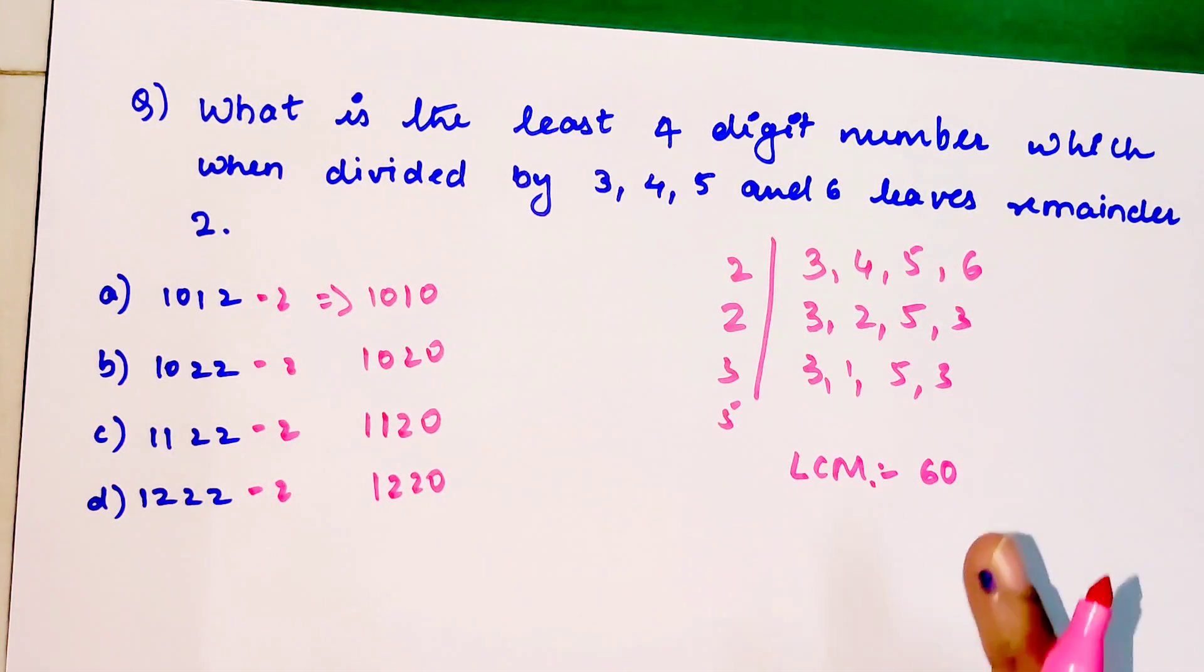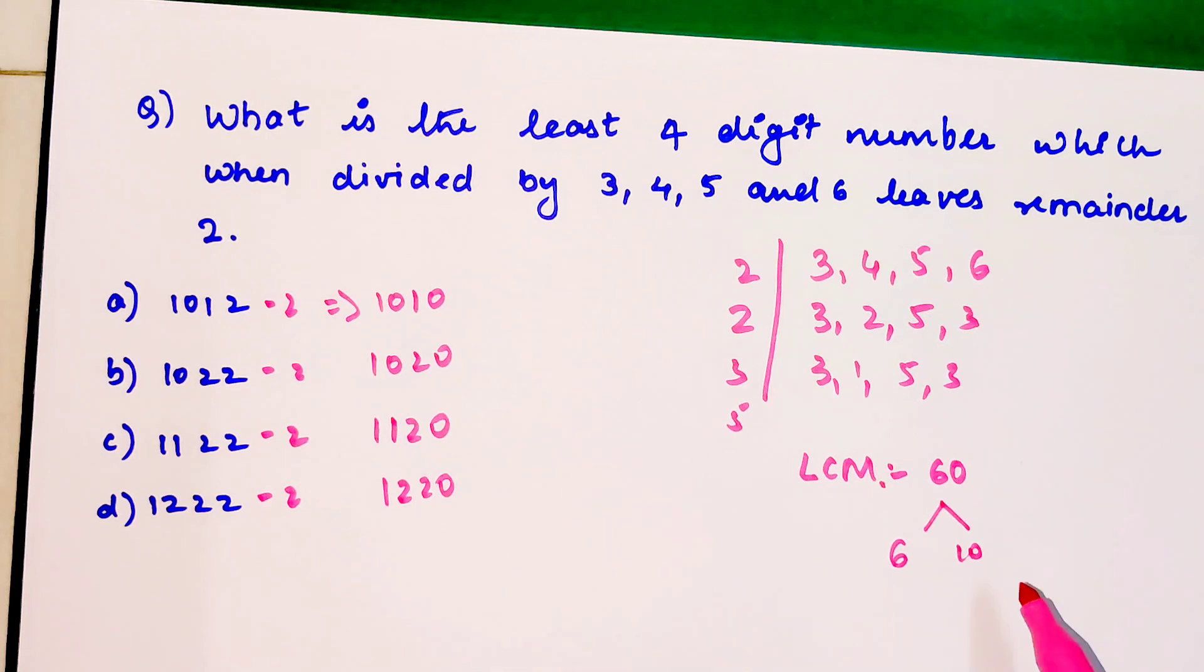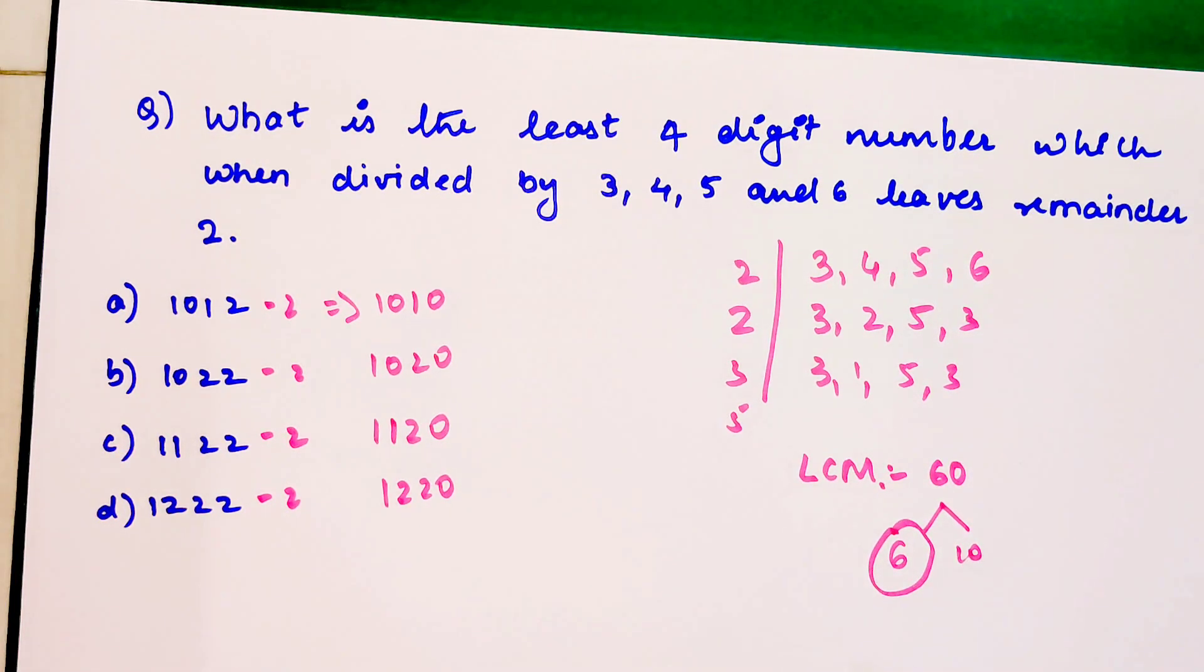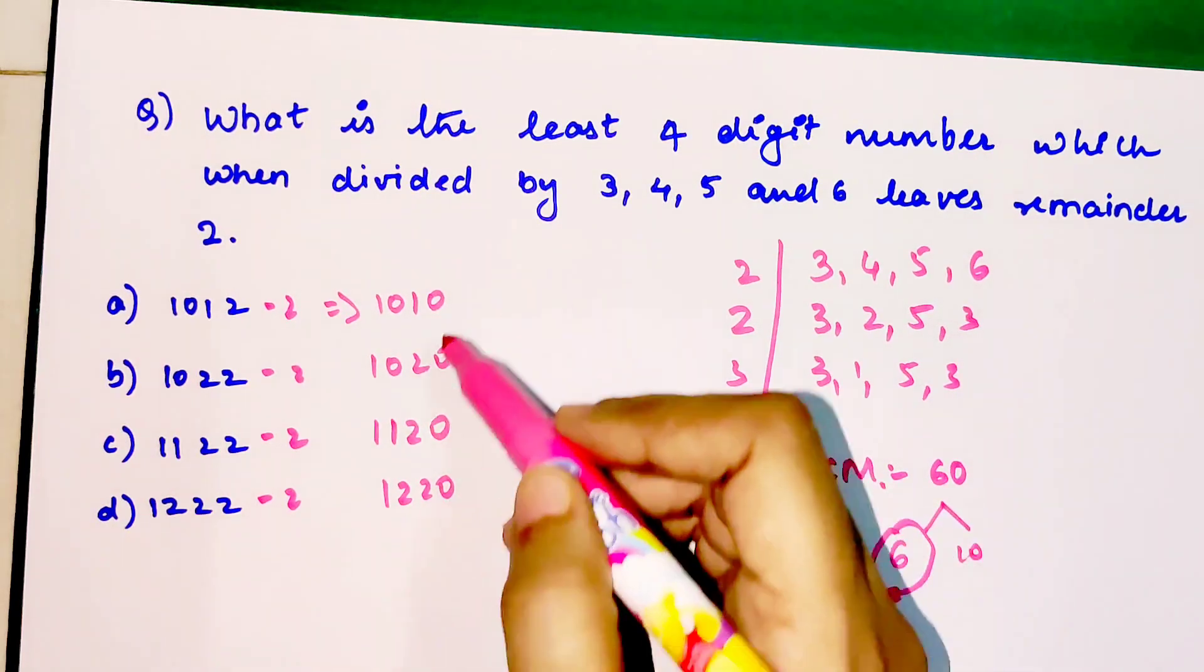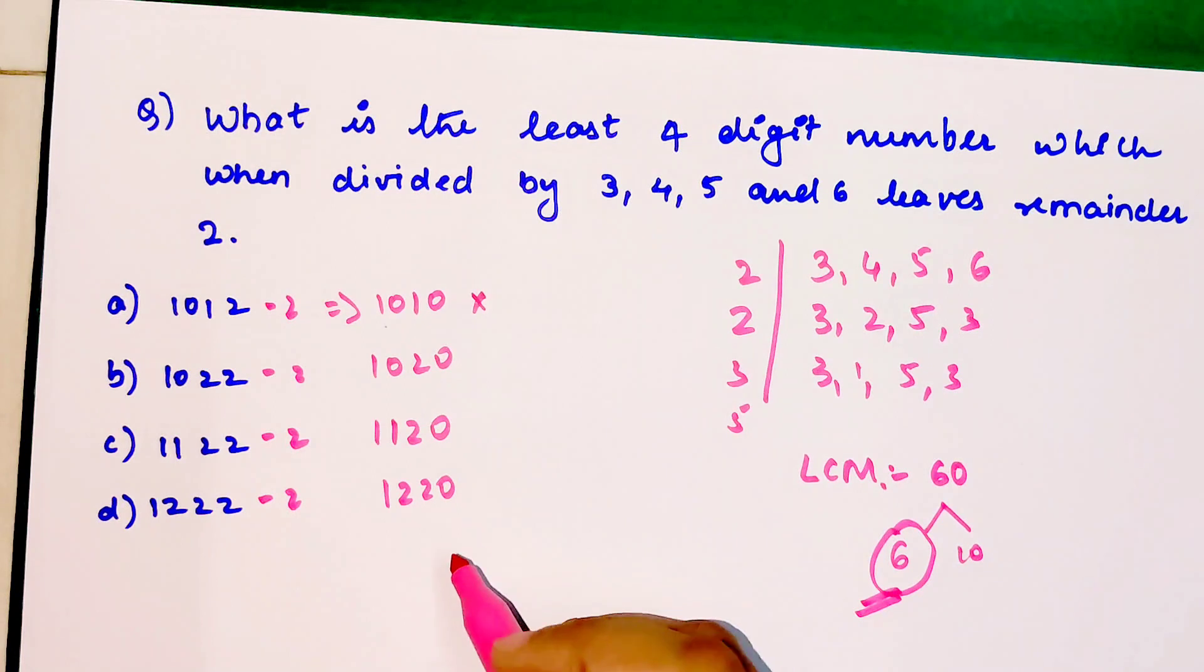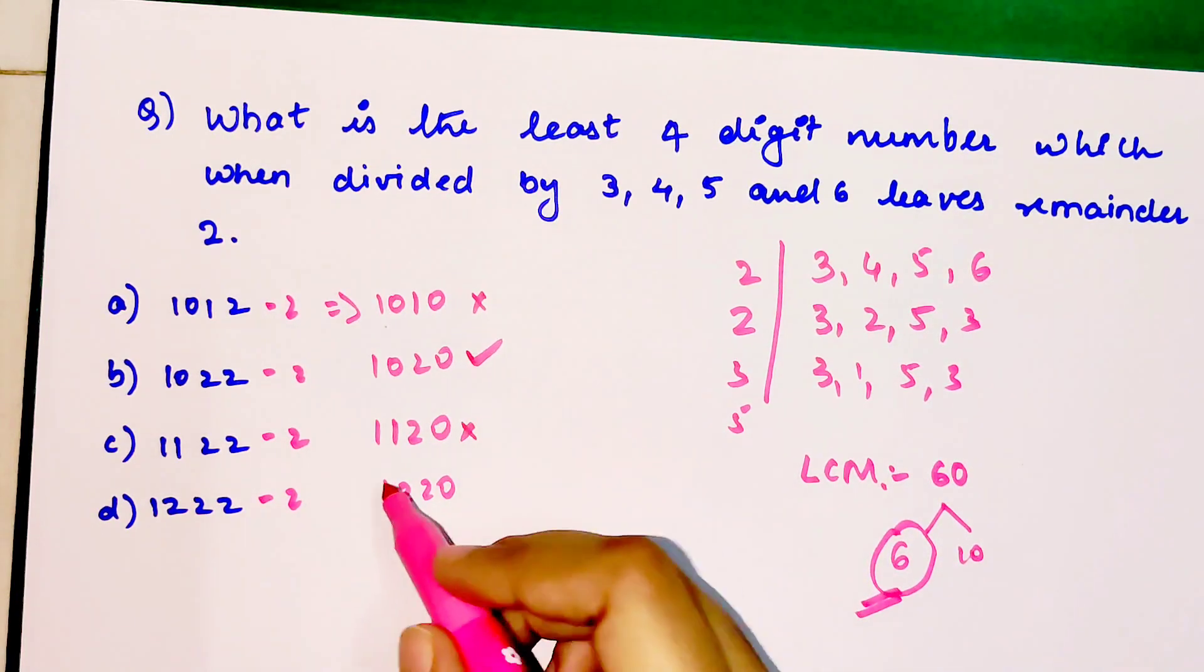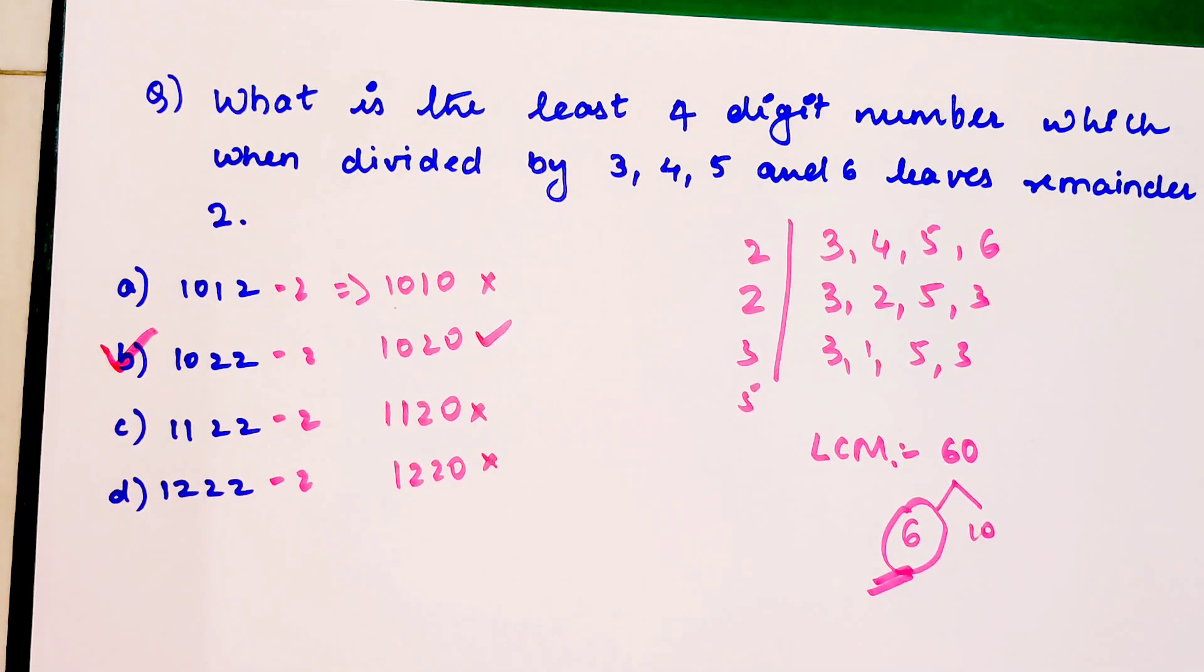All of them can be divided by 60, which is 6 × 10. We don't need to check divisibility by 10 since all end in 0. We just need to check divisibility by 6, which means it must be even (all are) and digits must sum to a multiple of 3. 1+0+1+0 = 2 (not divisible by 3), 1+0+2+0 = 3 (divisible by 3), 1+1+2+0 = 4 (not divisible), 1+2+2+0 = 5 (not divisible). So option B is correct.